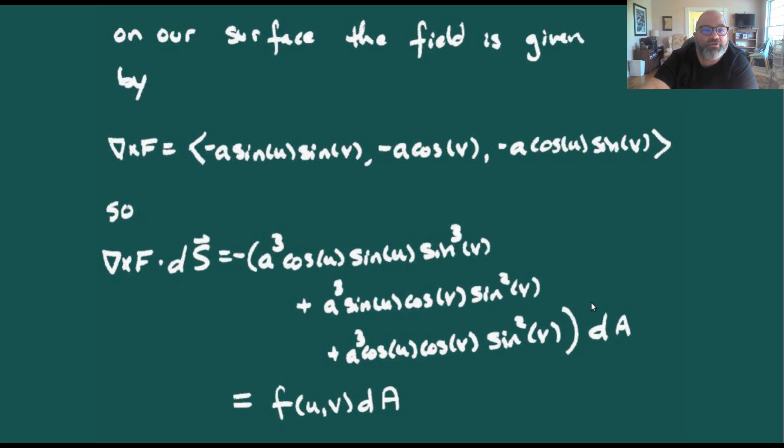With our desired orientation ∂s/∂v × ∂s/∂u for the normal vector, we evaluate the curl on our surface by plugging in our values for x, y, and z. Computing curl(F)·dS gives us an expression we'll call f(u,v) dA.